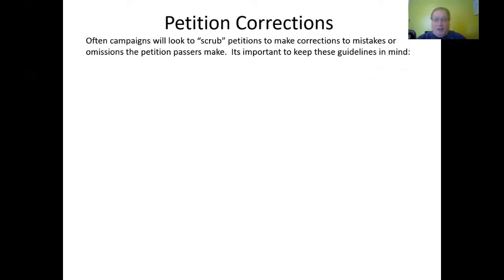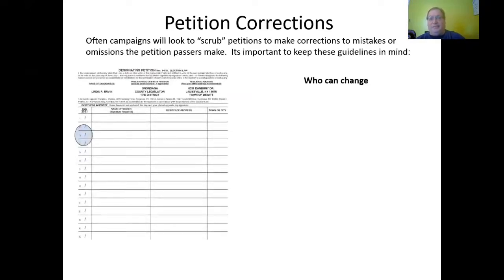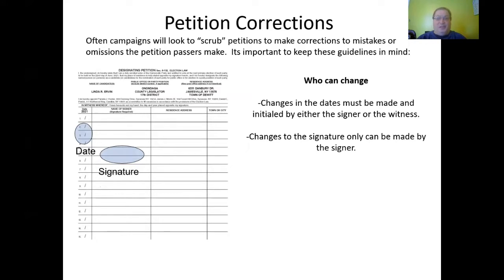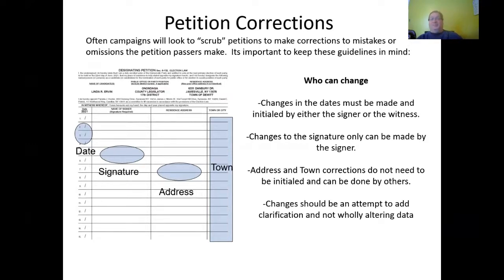Petition corrections: often campaigns will look to scrub petitions to make sure corrections to mistakes or omissions made by petition passers are addressed. Changes in the dates must be made and initialed by either the signer or the witness. Changes to the signature can only be made by the signer. Address and town corrections do not need to be initialed and can be done by others. Changes should be an attempt to add clarification and not wholly alter data. Make sure you do those changes before you submit those petitions, because if you submit without making corrections, you may not be eligible to make those changes later on if an objection comes in.